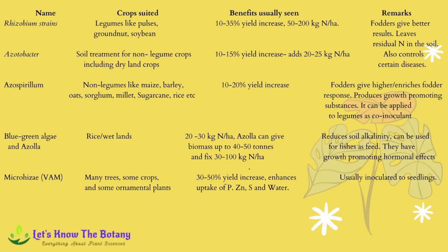Azotobacter similarly gives a 10 to 15 percent yield increase and also controls certain diseases in dry land and non-leguminous crops. Azospirillum increases yield by 10 to 20 percent, enriches fodder response, and produces growth-promoting substances. It can be applied to legumes as a co-inoculant.